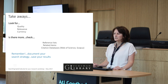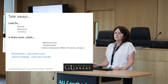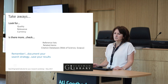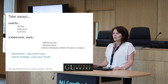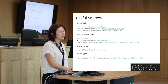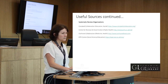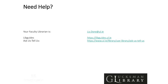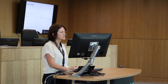Key takeaways: always look for quality, relevance, and currency in your sources. If you're finding very little, you may be too broad or using too many keyword variations. Other places to look include reference lists of papers you've already found, related items, and citation databases like Web of Science and Scopus. Document your search strategies and save your results. Links to mentioned sources will also be found in your subject LibGuides. For further help, contact the faculty librarian for Education and Health Sciences, or use the online inquiry service.